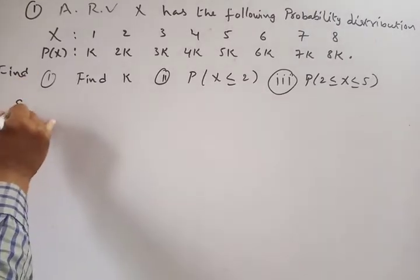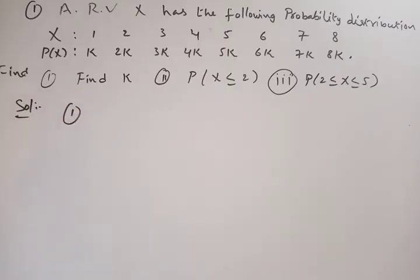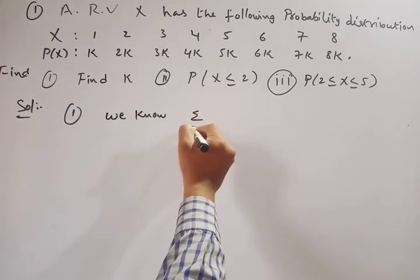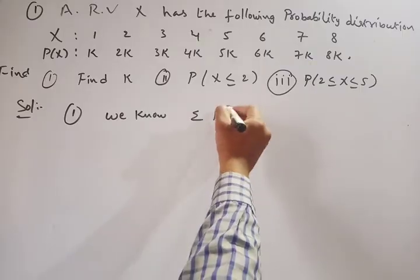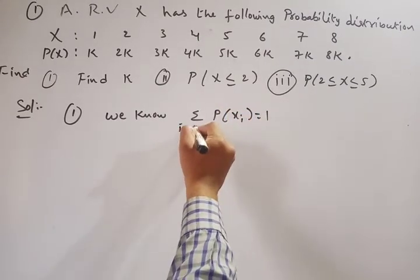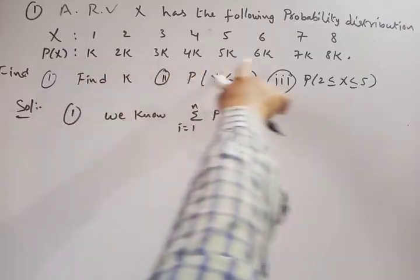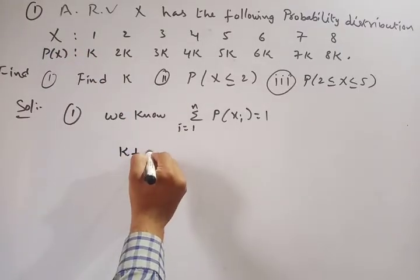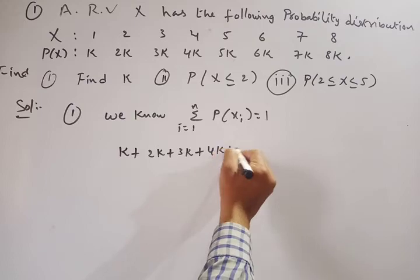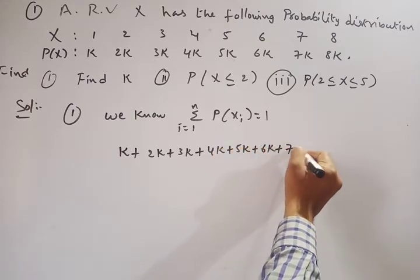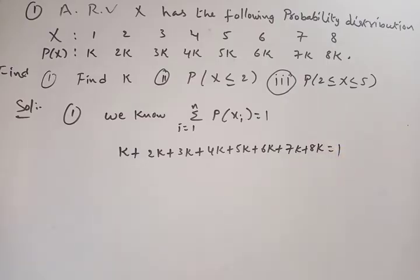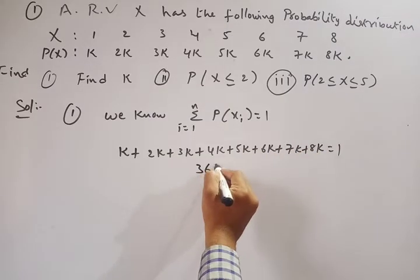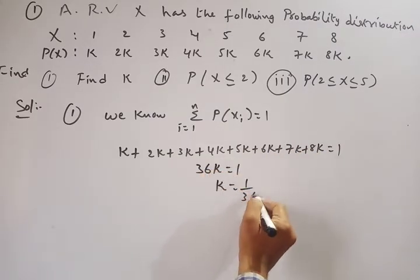Solution for the first part — finding k. We know that sigma P(Xi) = 1. So k + 2k + 3k + 4k + 5k + 6k + 7k + 8k = 1, which gives 36k = 1. Therefore k = 1/36.